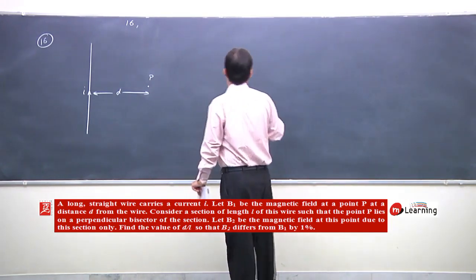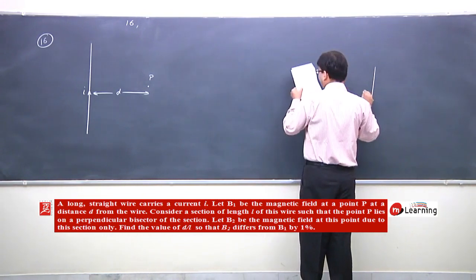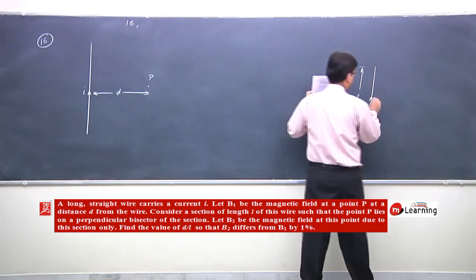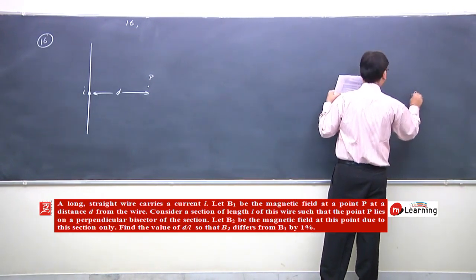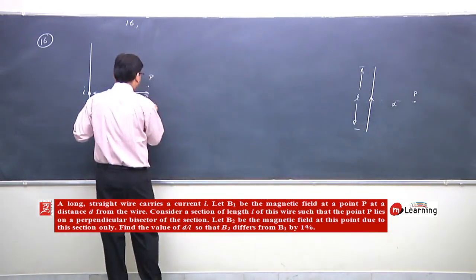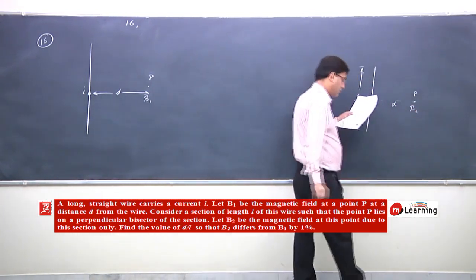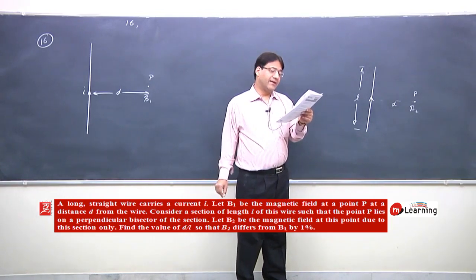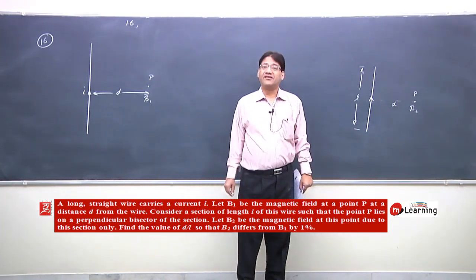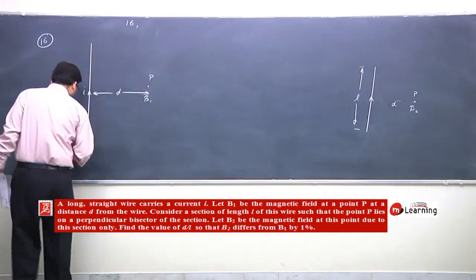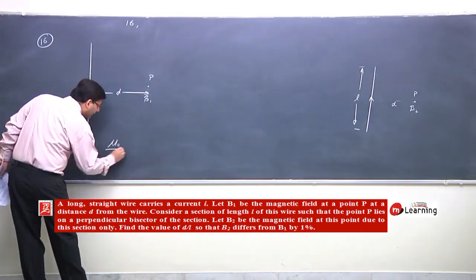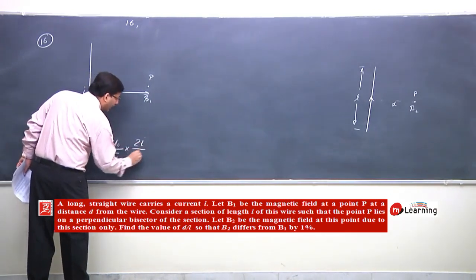We will find B1 and B2. B1 is due to the infinite wire and B2 is due to the finite section of length L. B1 due to the infinite long wire is: B1 = μ₀/4π · 2I/d. The formula uses current I and distance d, with cos θ₁ + cos θ₂.